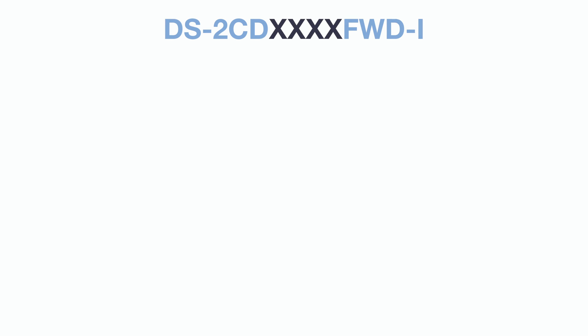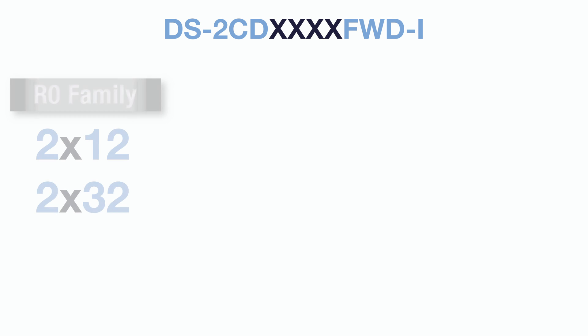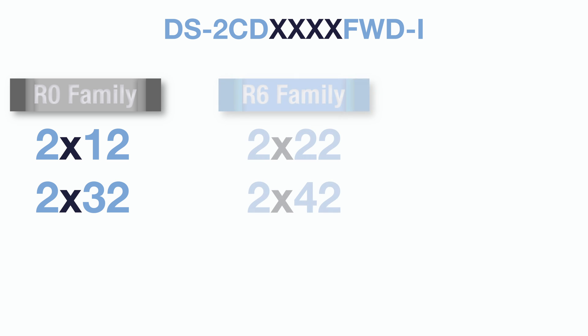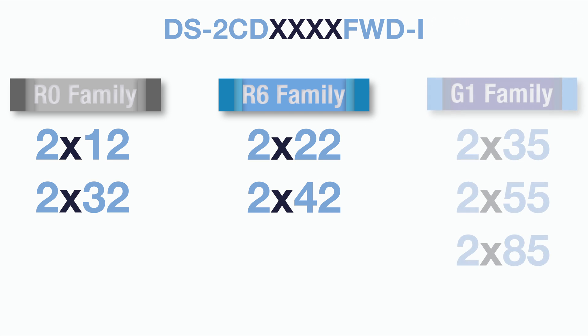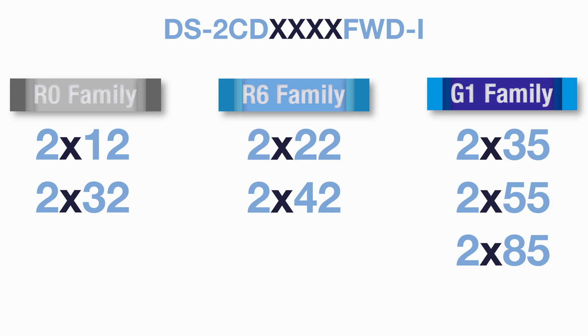The quickest way to identify which family your camera is from is to look at the four digits in the middle of the camera's product code. If the four digits read 2-something-12 or 2-something-32, it is an R0 camera. If they read 2-something-22 or 2-something-42, it is an R6 camera. And finally, if the digits read 2-something-35, 2-something-55, or 2-something-85, it is a G1 camera. For more help understanding Hikvision camera families, check out our forum post via the link in the description below.